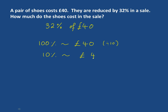We then find 1%. We divide it by 10 again and we'll get 0.4 pounds, which is 40p. So we always start by finding this 10% and this 1%, and then we use that to find our 32%.